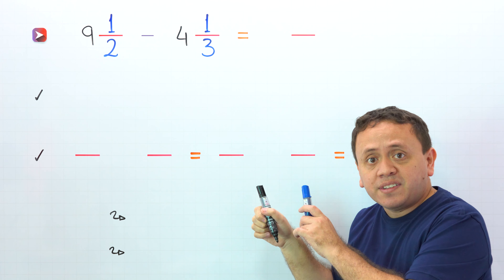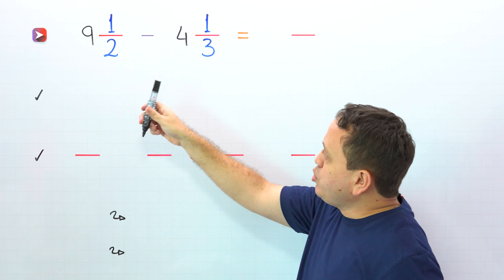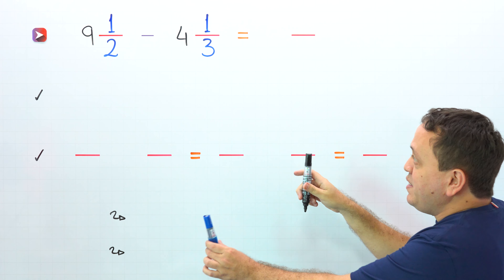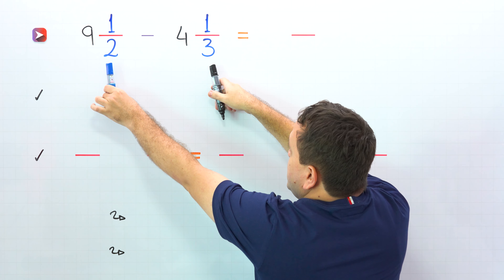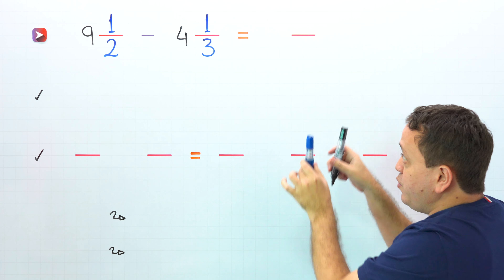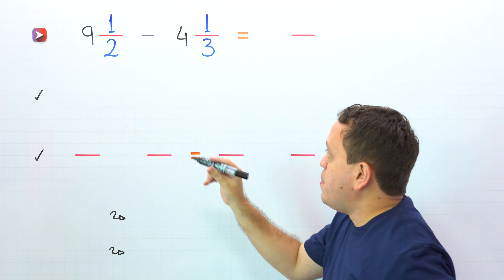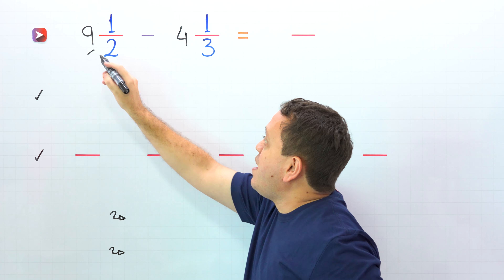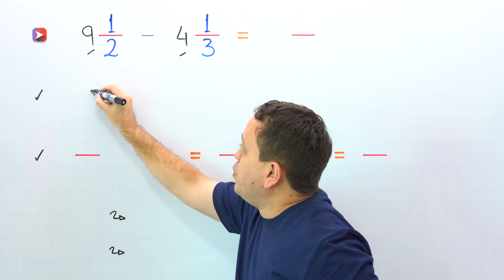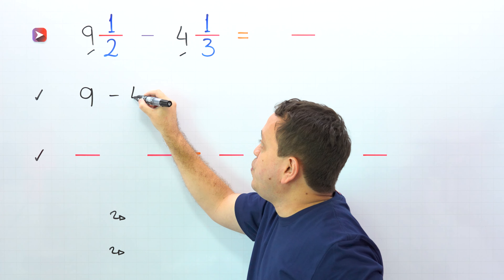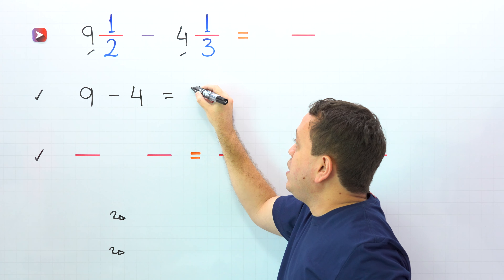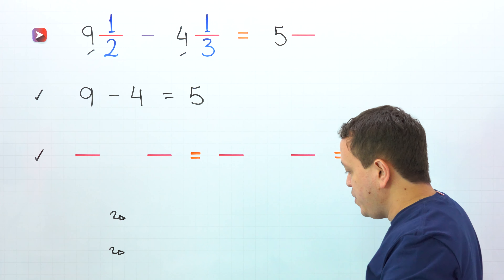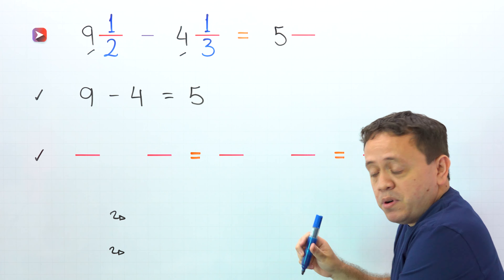Are you ready for the examples? In this example, we need to subtract 9 and 1 half minus 4 and 1 third. As you can see, these two mixed numbers have different denominators. To find the difference, first we subtract the whole numbers — 9 and 4. We put 9 minus 4, and 9 minus 4 is equal to 5. Next, we can put 5 in the answer.